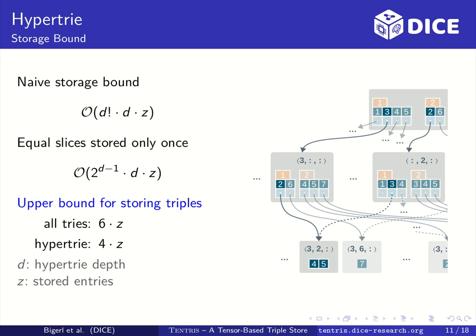Applying this optimization lowers the factor for the upper storage bound to 2 to the power of the number of dimensions minus 1. Applied to order 3 tensors used in Tentris, this means when populating tries for all collation orders, like for example RDF-3X does, the upper storage bound is six times the number of entries, while a HyperTrie has its upper storage bound at four times the number of entries. That is a decrease of one third.